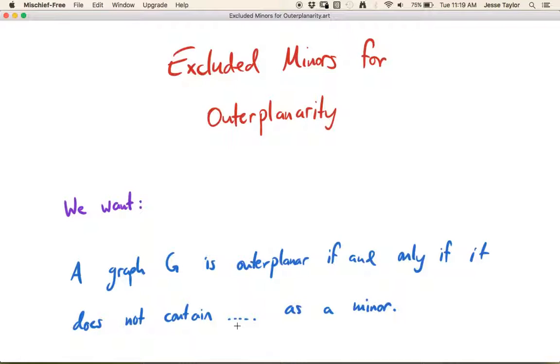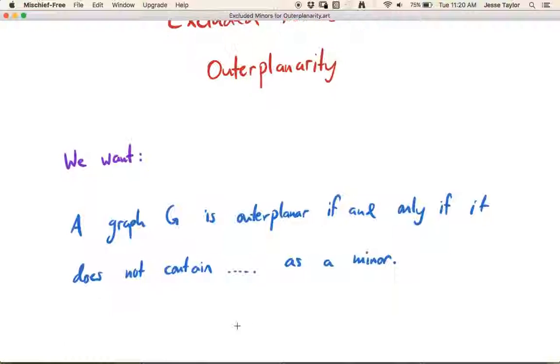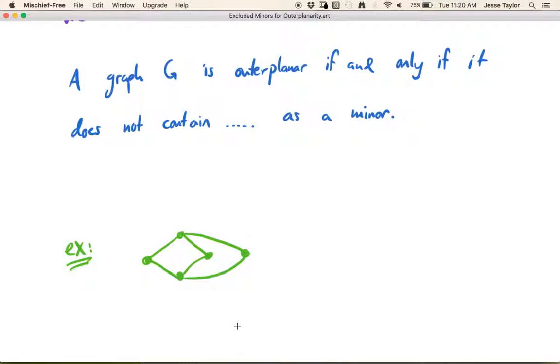For example, the corresponding result for planarity, just regular planarity, is that it's not allowed to have K5 or K33 as a minor, and only those two. So we want a similar result for outer planarity. But first, let's just explore a little bit how this process works.